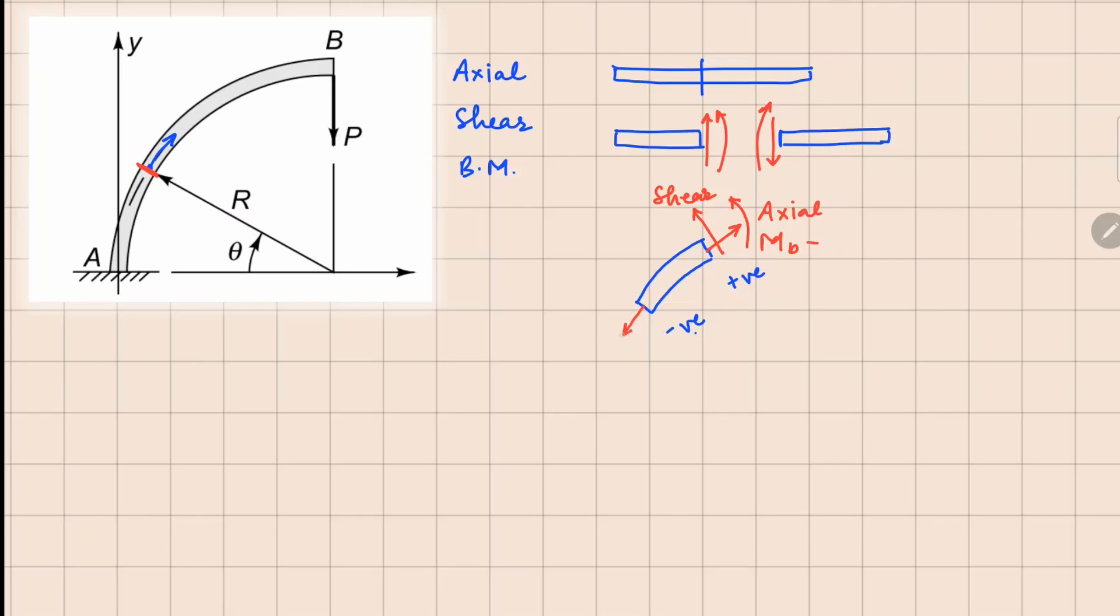Similarly on the negative face, all of the quantities will be opposite to the positive face. So this is your axial. Your shear force is going to be acting downwards and your bending moment is also going to be in the opposite sense.